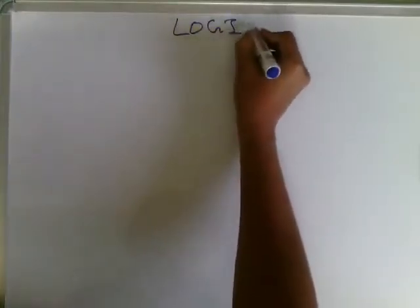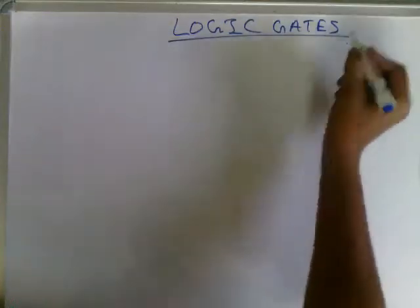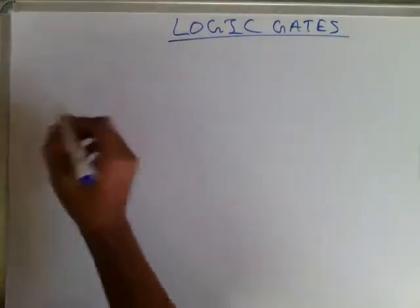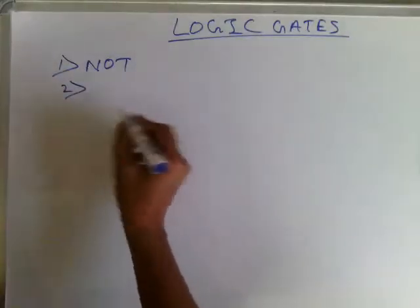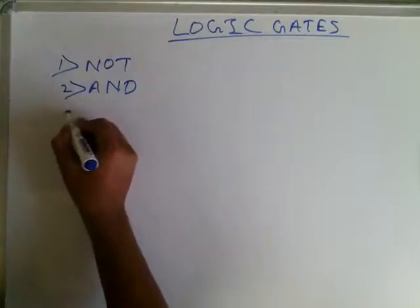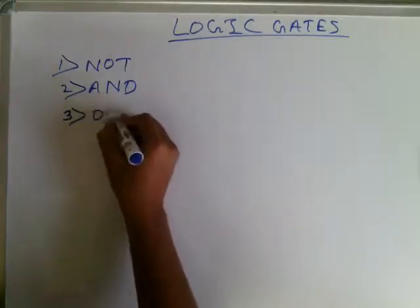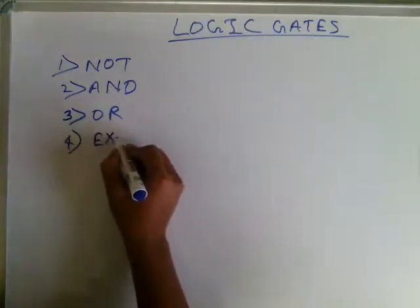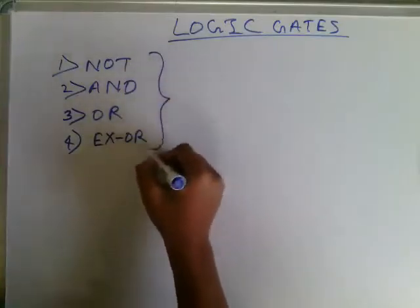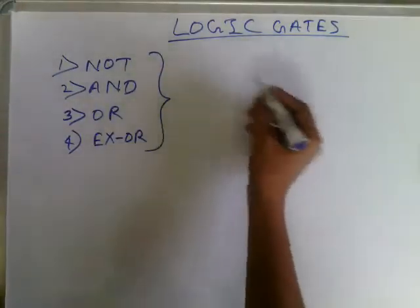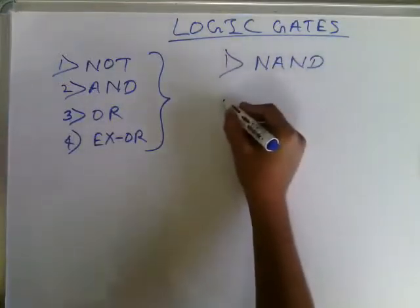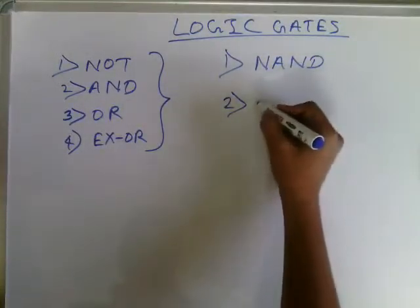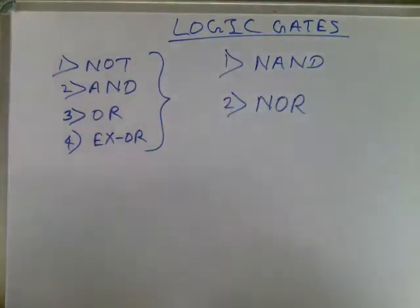Hello friends, today I am going to teach you about logic gates. There are four basic types: the first is NOT gate, second is AND gate, third is OR gate, and fourth is XOR gate. There are also two universal gates — the first is NAND gate and the second is NOR gate.